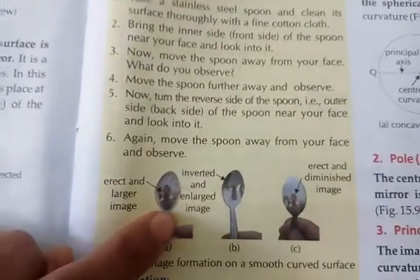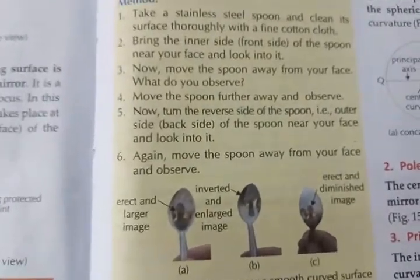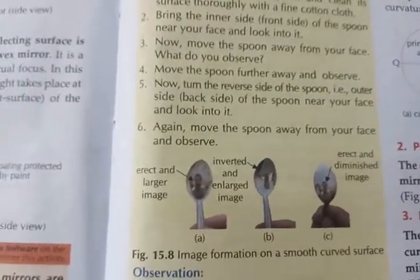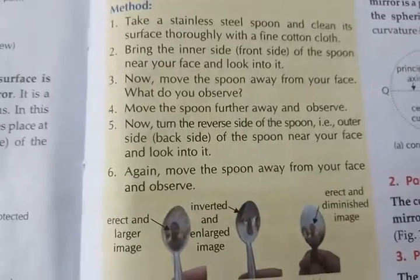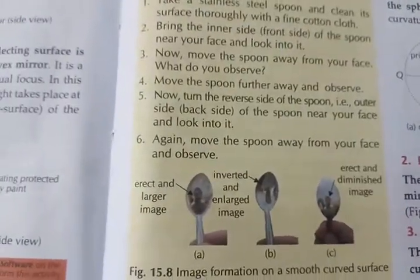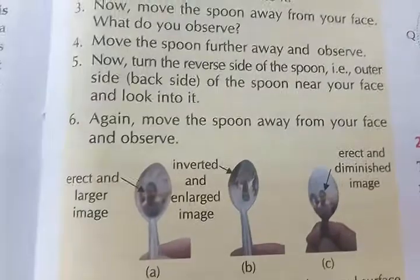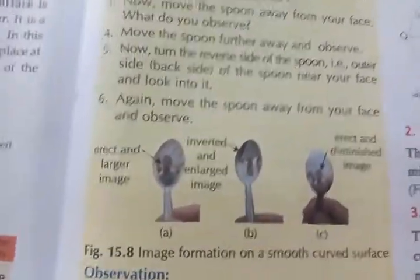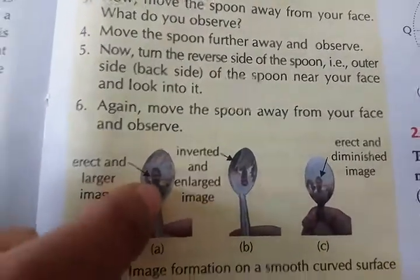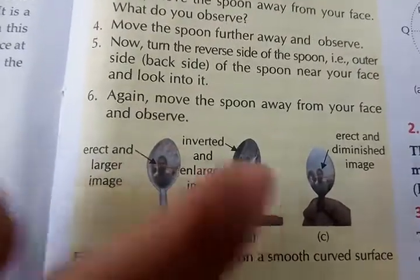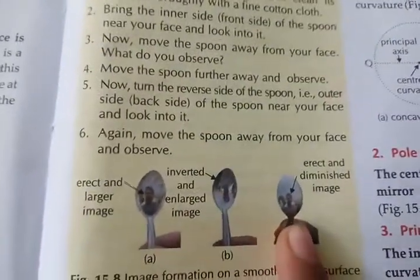Next activity: to study the nature of images formed by a smooth curved surface. You need a stainless steel spoon and a fine muslin cloth. Clean the spoon with the cloth and hold the inner (concave) side in front of your face. The image will be erect and enlarged. Then move the spoon away from your face — the image becomes inverted and still enlarged. Move it further away and the image remains inverted but becomes smaller.